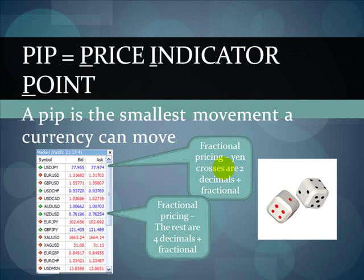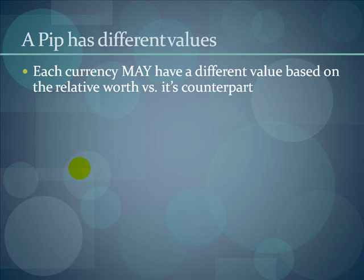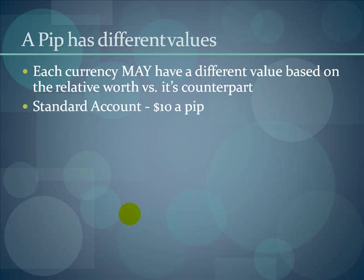We measure our profit in pips. If you come from the stock market, you're used to points; in the forex we use pips. A pip is actually one point on a dice. Prices are shown with decimal points — for instance, on the dollar-yen at 77.955, that's fractional pricing meaning it's 77.95 and a half pip. When the currency moves from 77.955 to 77.965, it has moved one pip. A pip has different values depending on the currency. In a standard account, a pip is worth $10; in a mini account it's $1; in a micro account it's $0.10.